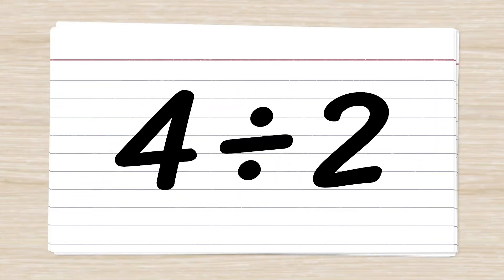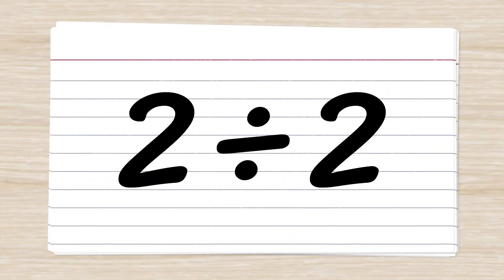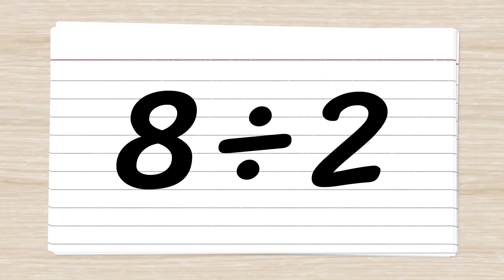Four divided by two. Two. 20 divided by two. 10. Two divided by two. One.